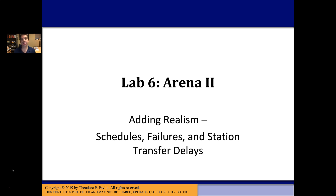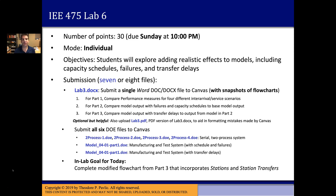The purpose of this lab is to build a few examples in ARENA that have elements of some of the realistic aspects of systems — things like scheduling capacities, scheduling failures, and so on. Like any of our normal labs, it's an individual assignment. You upload quite a few files here, but the first four have very few differences between them in ARENA. Along with six model files from ARENA, you'll also have a lab document, a docx file, that answers some comparison questions for the three parts of the lab.